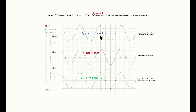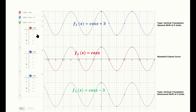The same vertical translation applies to cosine: the standard cosine function can be shifted up 3 units or down 3 units in the same manner, with identical behavior in the tables of values.